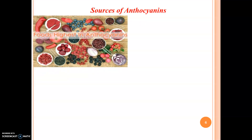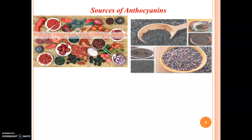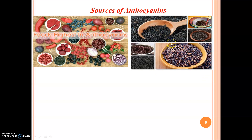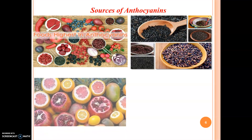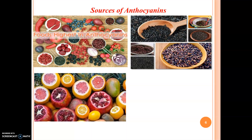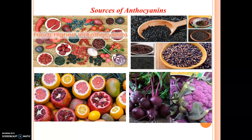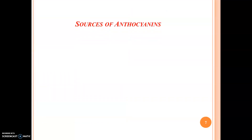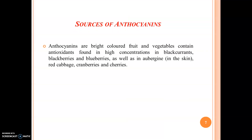Sources of anthocyanins: these are some of the sources of anthocyanins. All colored food substances are rich in anthocyanins. Black rice is a rich source of anthocyanins. All colored citrus fruits contain anthocyanins, as do colored beetroot and cauliflower. Anthocyanins are found in bright colored fruits and vegetables, in high concentrations in blackcurrants, blackberries, and blueberries, as well as in aubergine skin, red cabbage, cranberries, and cherries.